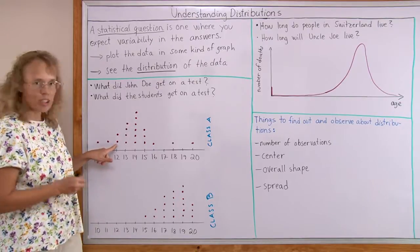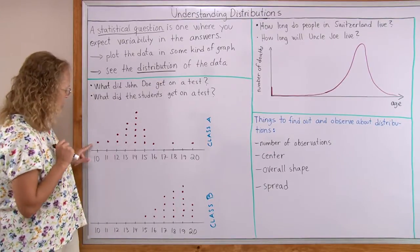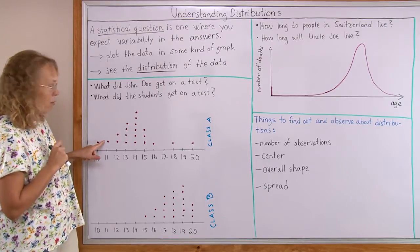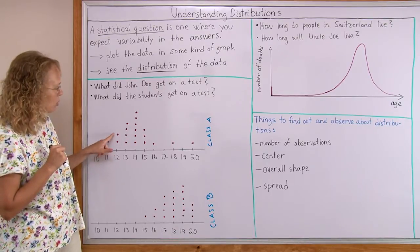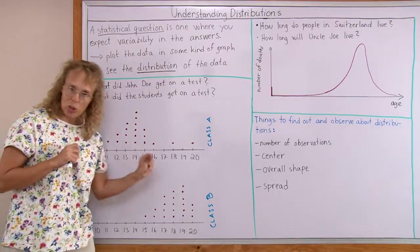Each dot here corresponds to one student. So one student got 10 points, one student got 11 points, and there's two students got 12 points, and so on.